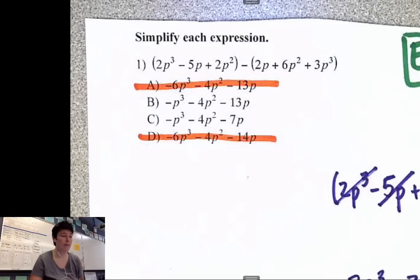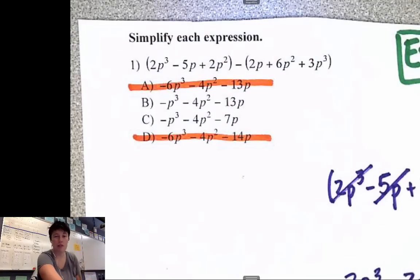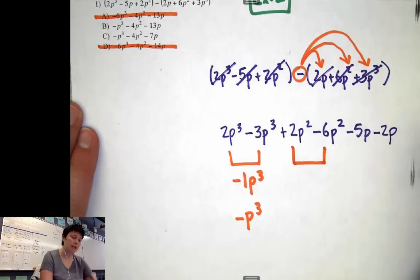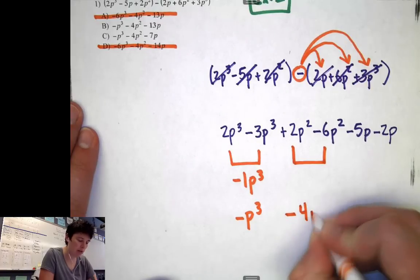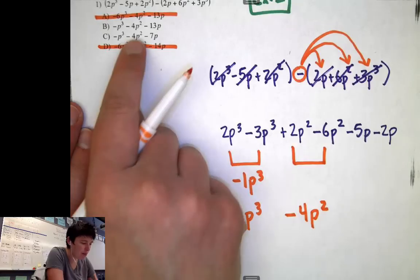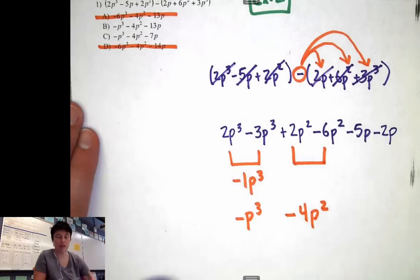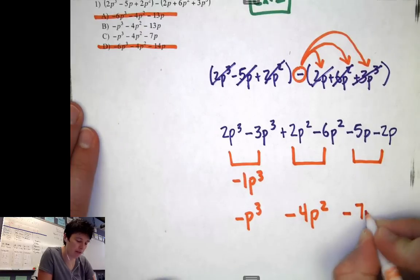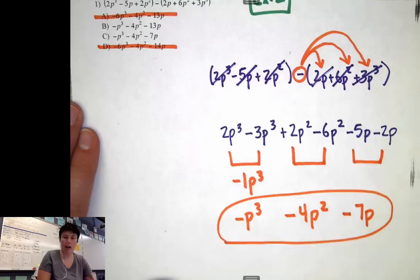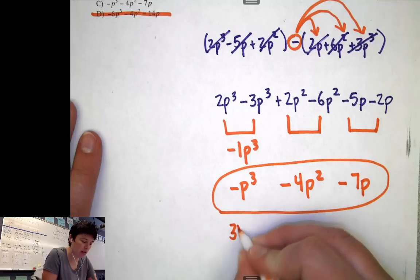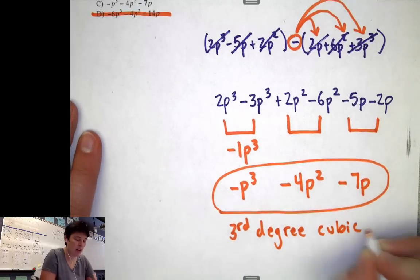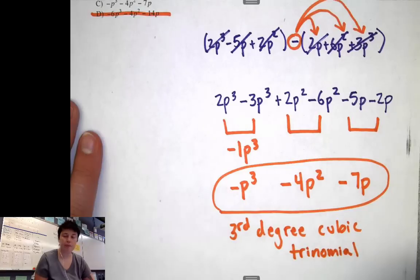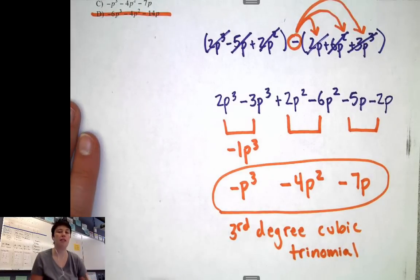But I don't need to guess — I know how to do the rest of this. Next: 2p squared minus 6p squared. 2 take away 6 is negative 4p squared. Both B and C have negative 4p squared, so I still can't eliminate yet. Now: negative 5 take away another 2p gives a negative 7p. So my final expression is negative p to the third, minus 4p squared, minus 7p. The highest power is third degree — cubic. It's got three terms, so it's a trinomial: a third degree cubic trinomial.